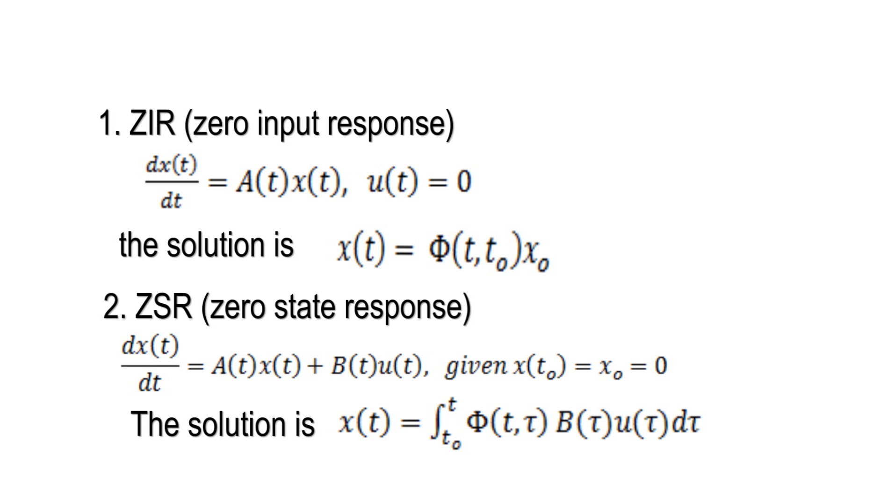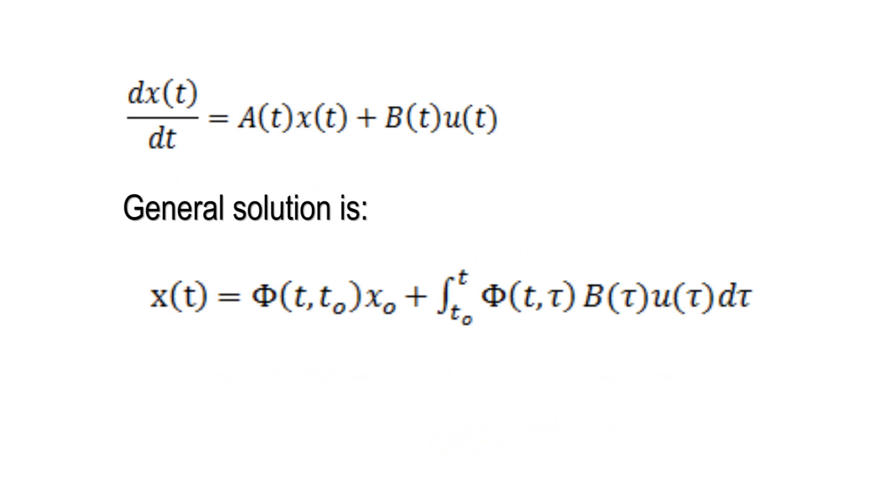When the initial condition is zero, we can use an integral to get the solution. We call it zero state response. In general, the state at t equals the combination of zero input response and zero state response.